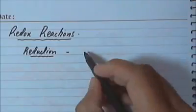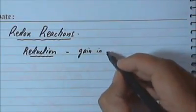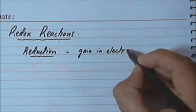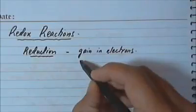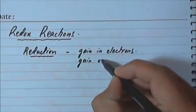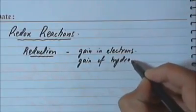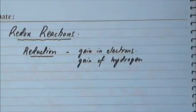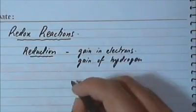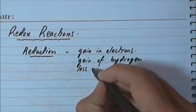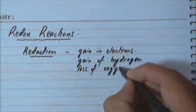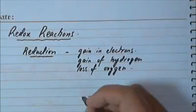Reduction has several different meanings. One is that it refers to a substance gaining electrons. So if something is gaining electrons, we say that substance has been reduced — a gain of electrons is called reduction. Similarly, a gain of hydrogen atoms is also considered reduction. Another definition of reduction is a loss of oxygen, so whenever something is losing oxygen, that will also be classified as reduction.